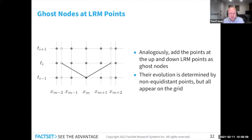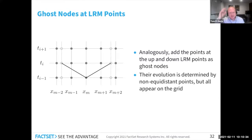You need as many ghost nodes as the order of accuracy you want — order ΔX squared — to preserve the tridiagonal properties of the matrices. That's what ghost nodes are; that's not really the point of the talk, just motivation before talking about putting them where the likelihood ratio method points need to be. We put the LRM upstate and downstate as ghost nodes, calculate their propagation on a non-equidistant grid, and then we have the two nodes needed to calculate delta. I've only done the ghost node implementation so far.